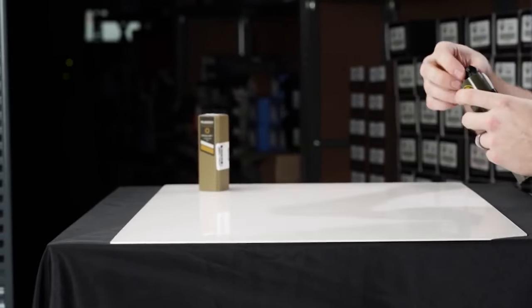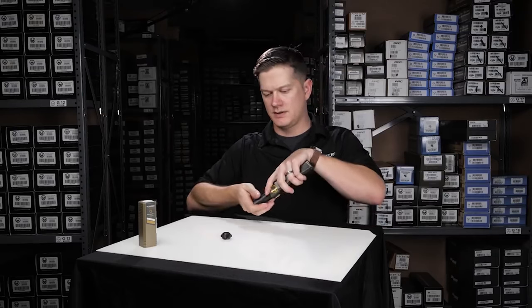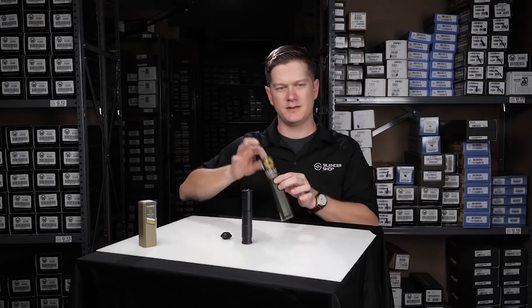Inside the box, Rugged provides you with the end cap removal tool, the silencer itself, and your user manual.